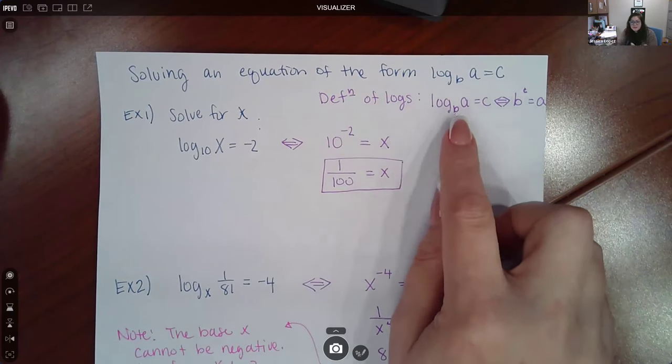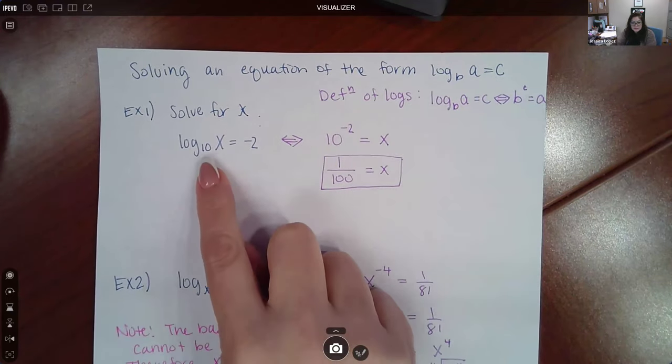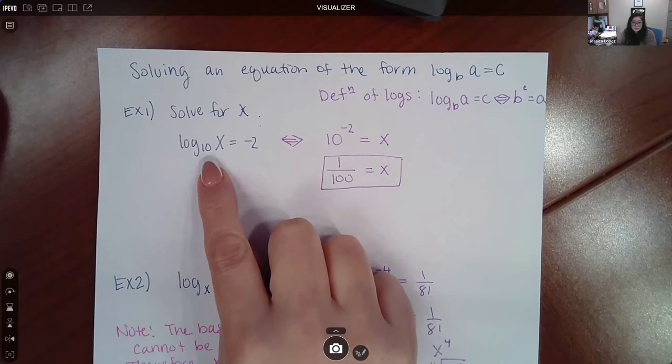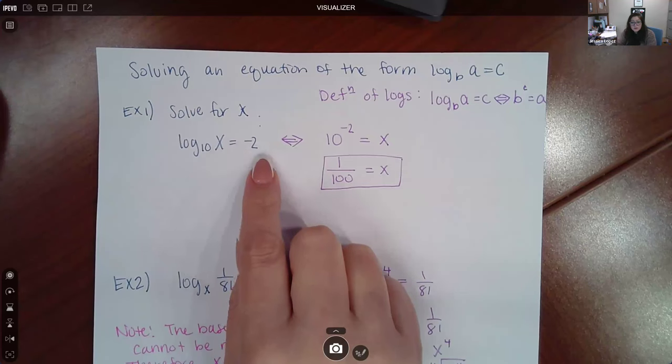So basically, the base stays the base, and the other two numbers swap sides. So if I have a problem like this, and it's asking me to solve for X, I have log base 10 of X equal to negative 2.